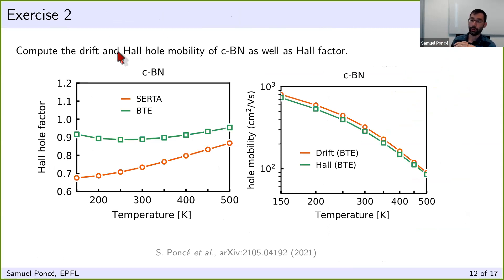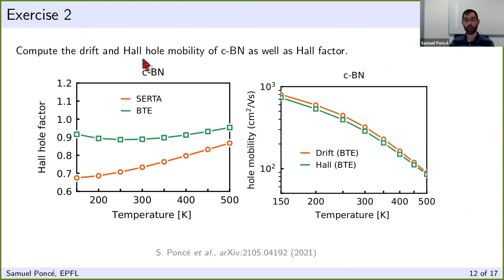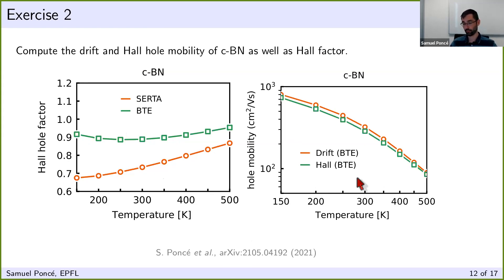For exercise two, we will compute the Hall mobility of cubic boron nitride as well as the Hall factor. These are the converged values shown in the talk and in an archive paper. We'll try to reproduce those plots on a less dense grid and then attempt convergence. This is a log-scale plot showing the drift iterative solution without Hall factor and the green curve with the Hall factor — notably the Hall factor is less than one here, so mobility actually decreases.